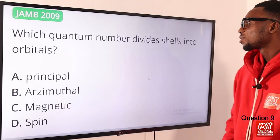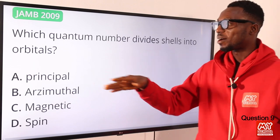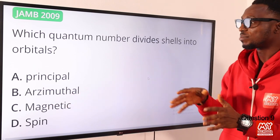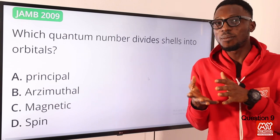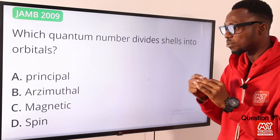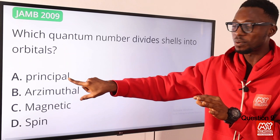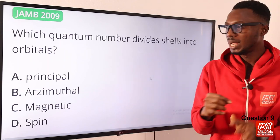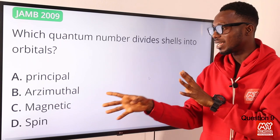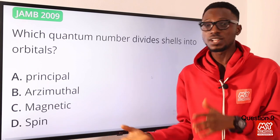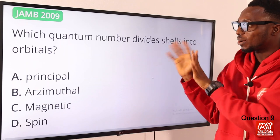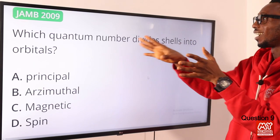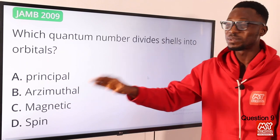Question 9: which quantum number divides shells into orbitals? The principal quantum number describes shells (K, L, M, N). The azimuthal quantum number gives the subshells S, P, D, F — those are the orbitals we are talking about. The magnetic quantum number describes the number of orbitals within each subshell: S has 1, P has 3, D has 5, F has 7. The spin quantum number describes electron spin. So option B — the azimuthal quantum number — is the correct option.